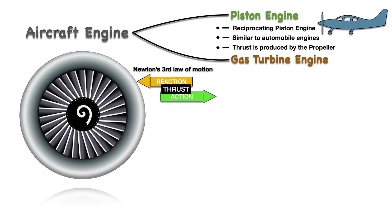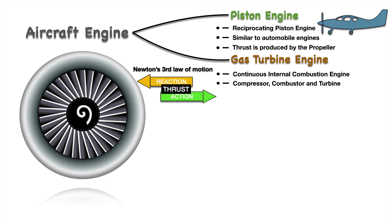The gas turbine engines, which are used in almost all large commercial or military aircraft, are continuous internal combustion engines. All gas turbine engines consist of three major parts: compressor, combustor, and turbine, and work on the concept of the Brayton cycle.